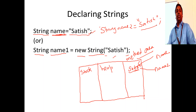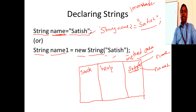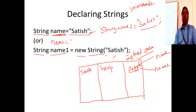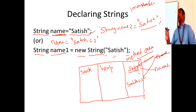This leads to a very important concept: strings are immutable. Once declared, you cannot change the actual string value. If you reassign a variable like `name = "Satish CJ"`, it doesn't modify the original string. Instead, it removes the reference to "Satish", creates a new location storing "Satish CJ", and makes `name` point to the new location. The original string remains immutable.